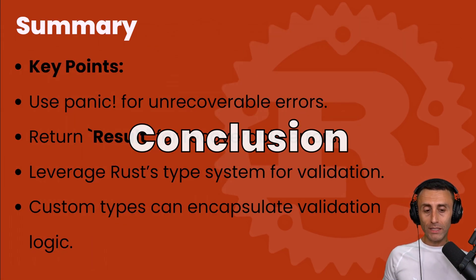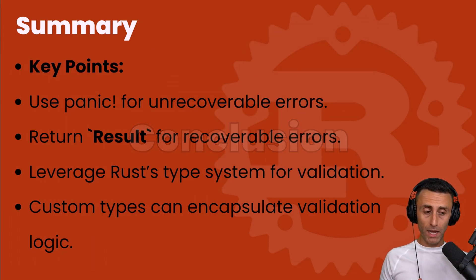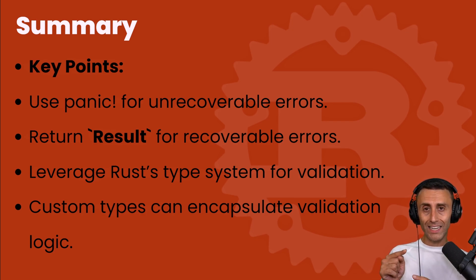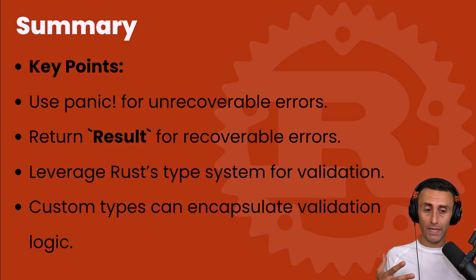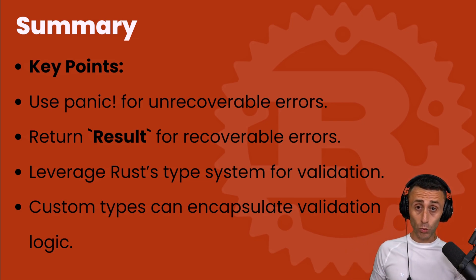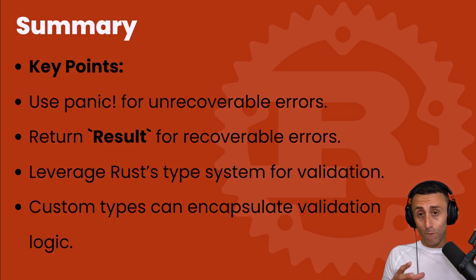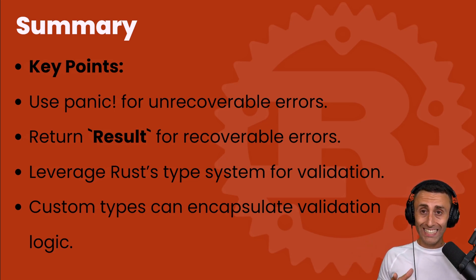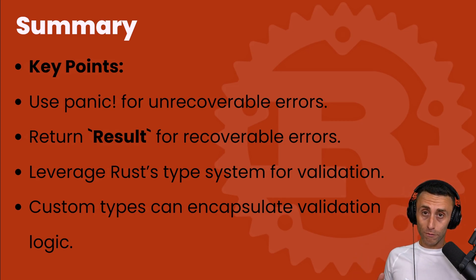The key points are: use the panic macro for unrecoverable errors where the program should stop executing, or return the Result type to manage errors gracefully. This is similar to exception handling in other languages like Java. We can also use Rust's type system for validation and create custom types to encapsulate validation logic for other types or functions.